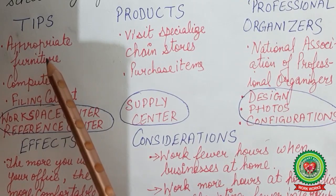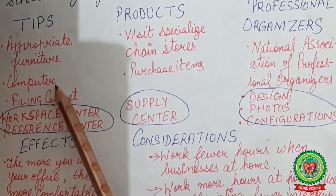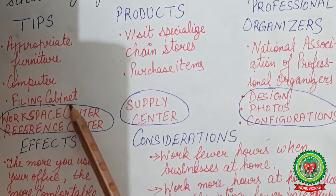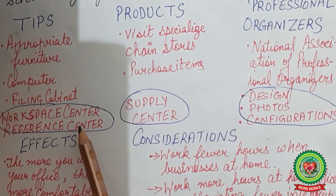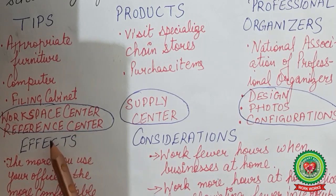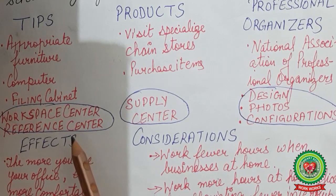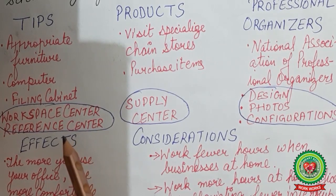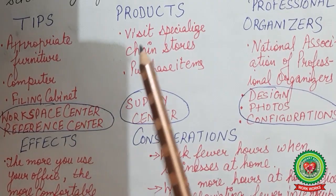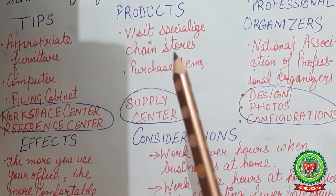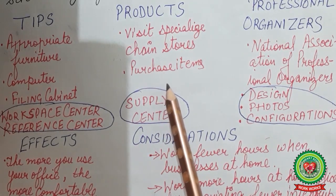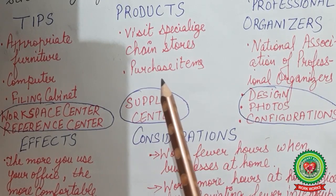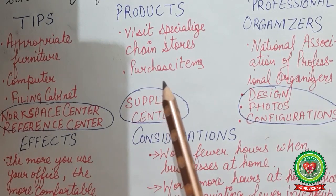Raman is arranging for appropriate furniture — these days computers and laptops are our necessities, along with filing cabinets. His main focus is on two centers: first is the workspace center, the area where you want to work from home; another is the reference center, the place in your home where you can keep a pile of things you can use in your work. Then he looks at products — he visits specialized chain stores and also places orders online to accommodate such items.